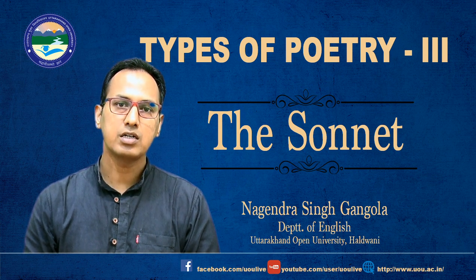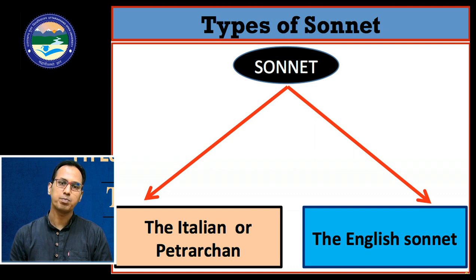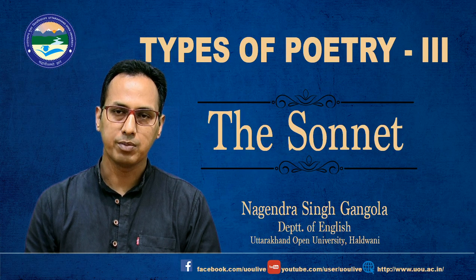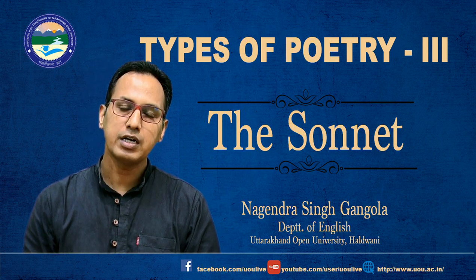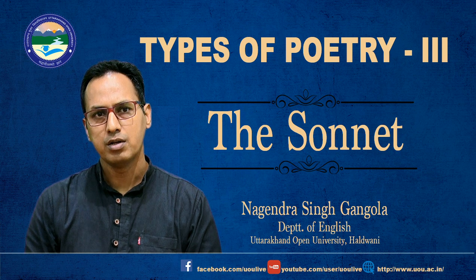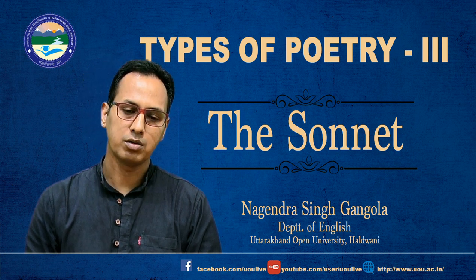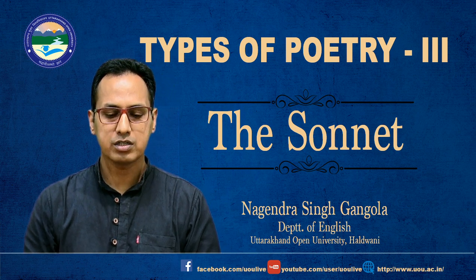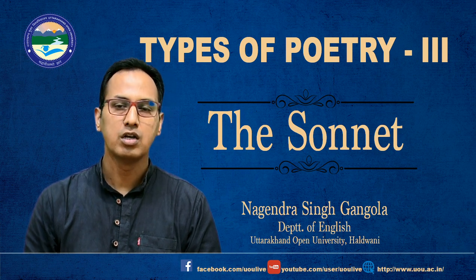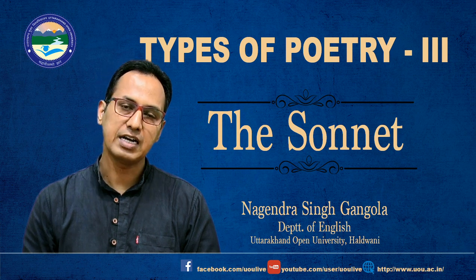Sonnets are of two types: one is called the Italian or Petrarchan sonnet, and the second is the English sonnet, also called the Shakespearean sonnet. The Italian sonneteer Petrarch experimented with the form, and that's why it is known as the Petrarchan sonnet. It is sometimes also called the classical sonnet because it was modeled by everyone after the Petrarchan sonnet — it worked as the norm of the sonnet. Classical is always bound by some norms and rules and regulations, so people started taking the Petrarchan sonnet as a classical model.